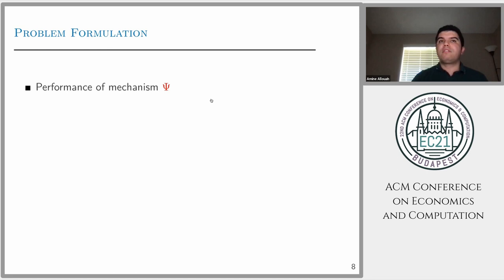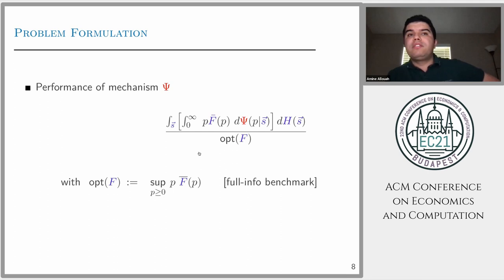Given a mechanism, how are we going to evaluate its performance? First, we look at the revenue. The seller will post a price P, and the buyer will buy with some probability whenever their value is greater than P, which is F bar of P. This is the expected revenue. We take expectation over the randomization of the seller's strategies and over the samples that the seller will have access to.